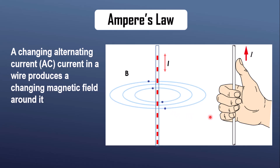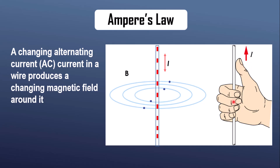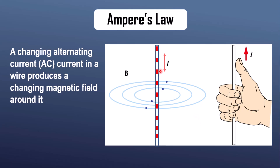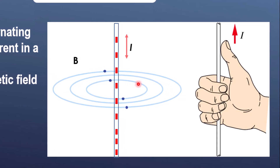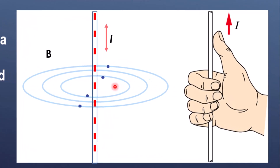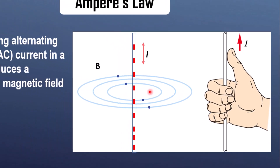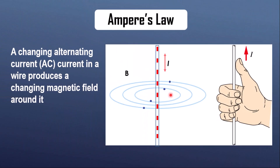According to the right-hand rule, if you point your thumb in the direction of the current, the magnetic field lines form concentric circles around the wire, curling in the direction your fingers point. But since AC changes direction periodically, the magnetic field also reverses direction with the current.